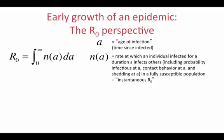To relate R0 to exponential growth and serial interval, let's first take the perspective of R0. Suppose that an infected person is creating new infections in a fully susceptible population at a rate N of A when they have had the infection for a time period A. We call A the age of the infection — how long the person has been infected. Over the total course of the infection, the person infects R0 other people. So R0 is the integral of N of A from infection age 0 to infinity.